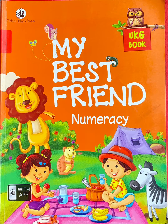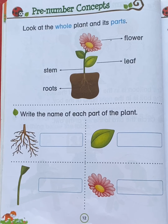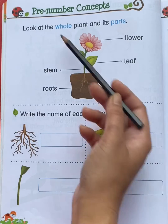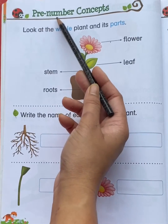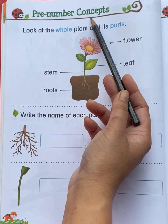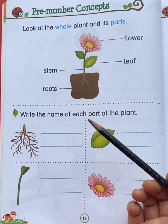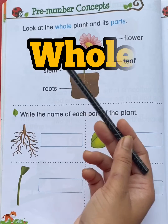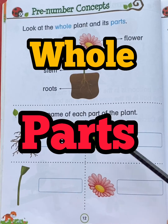Hello students, check out your My Best Friend Numeracy book and come to page number 12. The topic is pre-number concepts. Our today's pre-number concept is whole and parts.